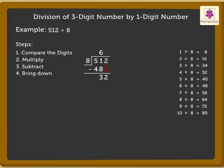Here, 32 is greater than 8. So, we can divide it by 8. 4 into 8 is equal to 32. Write 4 in the ones place in the quotient and the number 32 under 32.